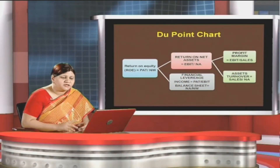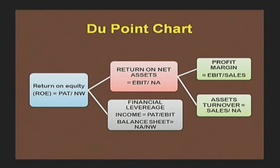Either formula can be used depending on the information furnished, and it can be used as the equity multiplier to ascertain return on equity. When we solve the formula, we get: PAT / NW — that is profit after tax divided by net worth. This is derived by multiplying EBIT / Net Assets by financial leverage (PAT / EBIT), giving us PAT / Net Worth.